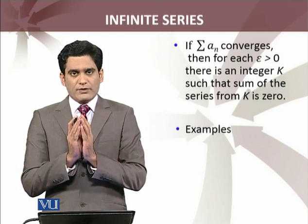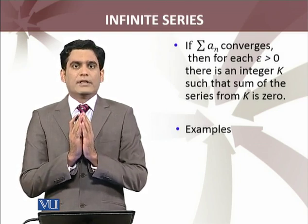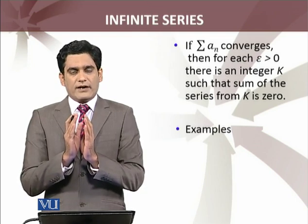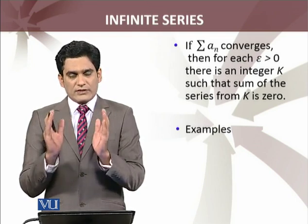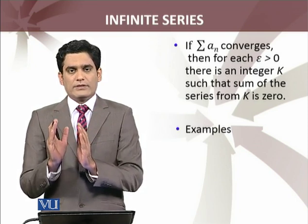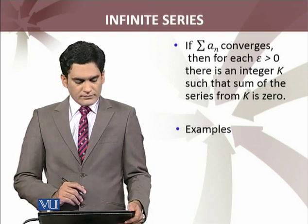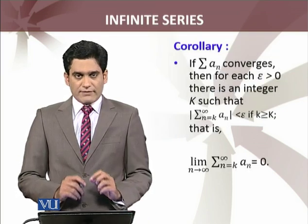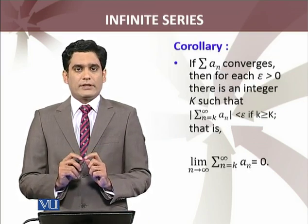So, we must be able to find out, for every epsilon greater than 0, some integer k, such that after that k, sum of the series equals 0. And of course, we will apply this result to some example. So, we have a small result, what we call the corollary.